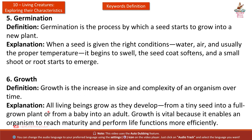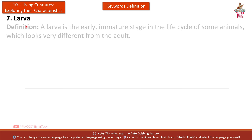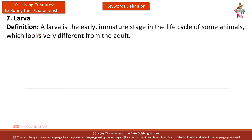Sixth: Growth. Definition: Growth is the increase in size and complexity of an organism over time. Explanation: All living beings grow as they develop — from a tiny seed into a full-grown plant, or from a baby into an adult. Growth is vital because it enables an organism to reach maturity and perform life functions more efficiently.